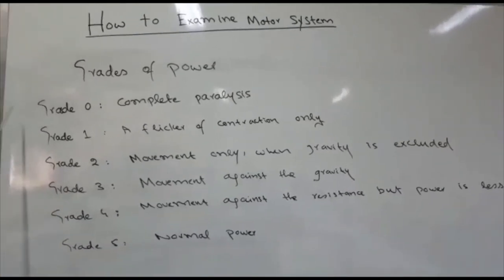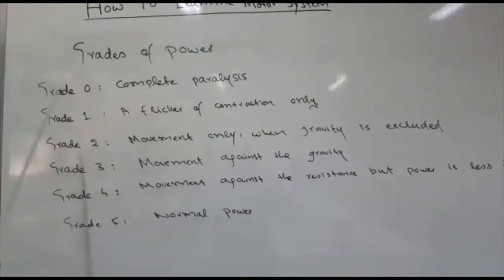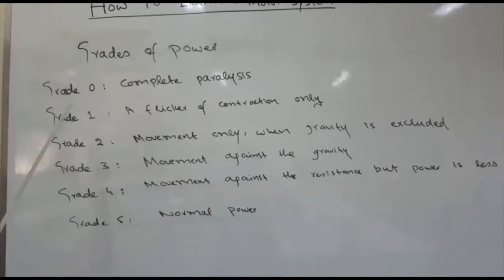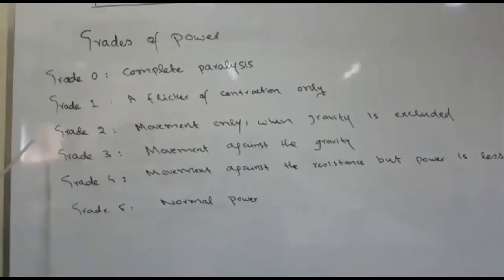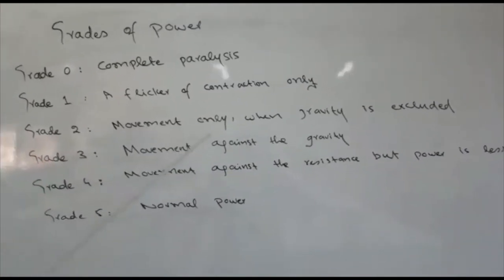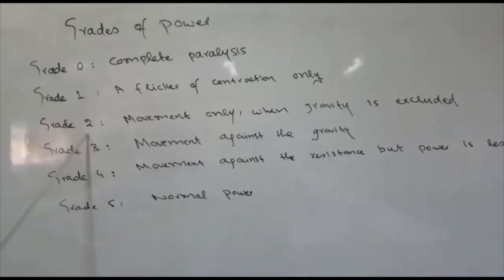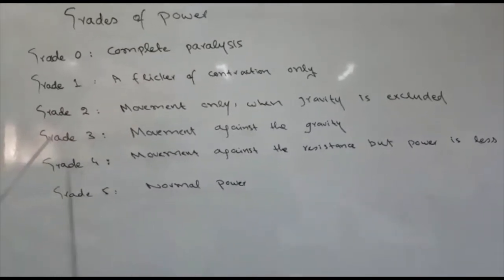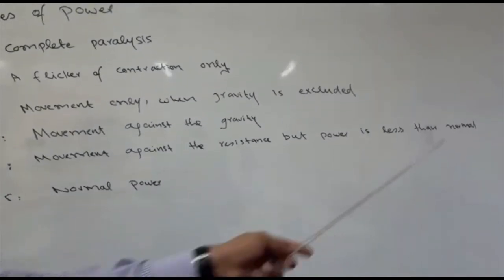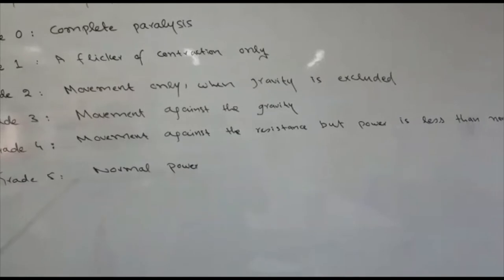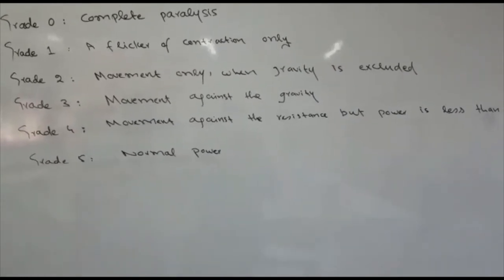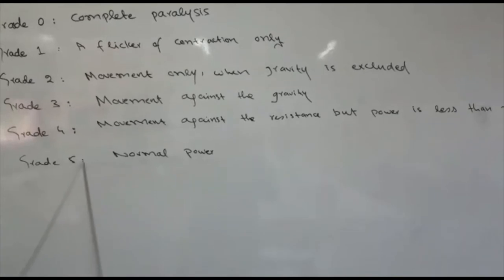Basically, there are five grades of muscle power. Grade 0 is complete paralysis. Grade 1 is a flicker of contraction only. Grade 2 is movement only when gravity is excluded. Grade 3 is movement against gravity. Grade 4 is movement against gravity but power is less than normal. Grade 5 is normal power in all muscles.